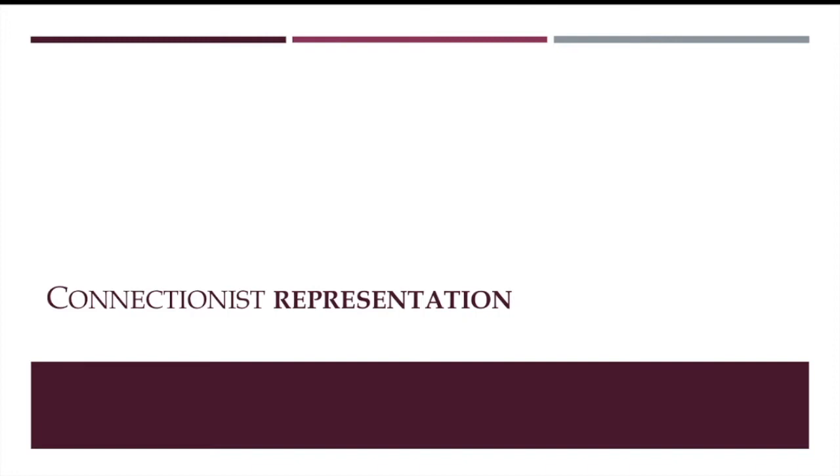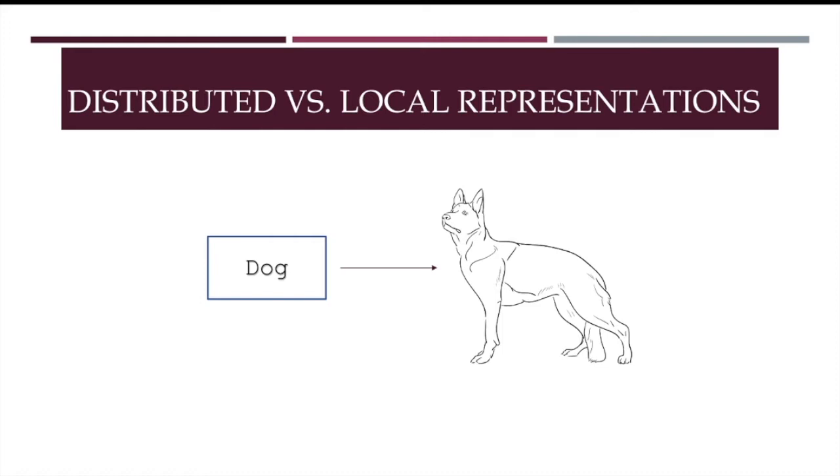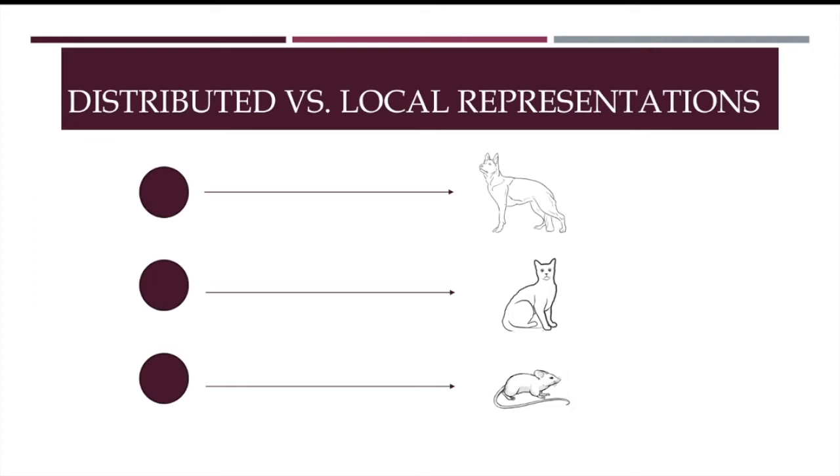Okay, now to connectionist representation. Another signatory issue is the way in which connectionist models handle representations. In a classical system that represents the concept of a dog, for instance, there may be a single symbol that has the job of standing for dogs. Some neural networks work like this, too. For instance, there might be one node that is in charge of representing dogs, another one in charge of representing cats, and yet another one that does the job for mice.